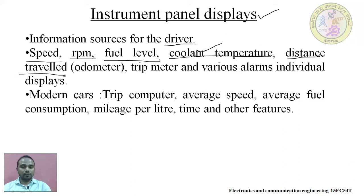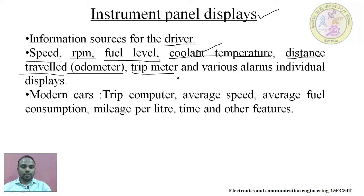The distance traveled is also shown in the odometer or instrument panel display. If a vehicle is used for commercial or tourist purposes, to reset the odometer to zero we use the trip meter — the name itself indicates it is used for trips. Along with these various parameters, the panel also has various alarms and displays which alert the driver and passengers.